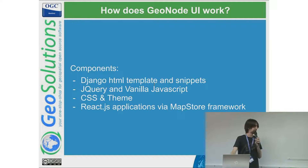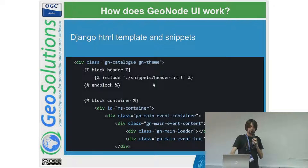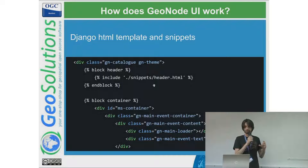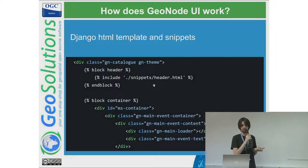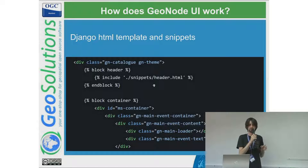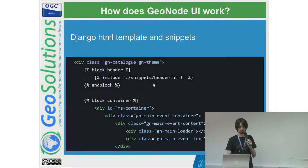Finally we introduced the MapStore framework with an application that can manage data from GeoNode. Here is an example of the HTML snippets — this is the catalog page. You can see HTML with some block headers; these blocks can be overridden by a GeoNode project and replaced with content you prefer. For example, a component could be completely removed or overridden.